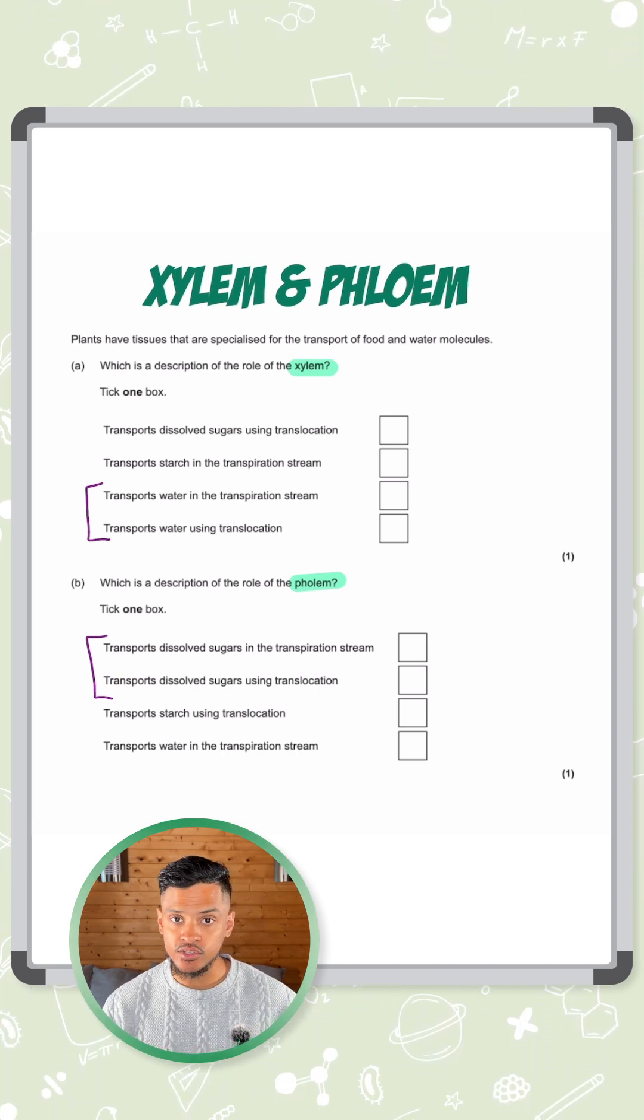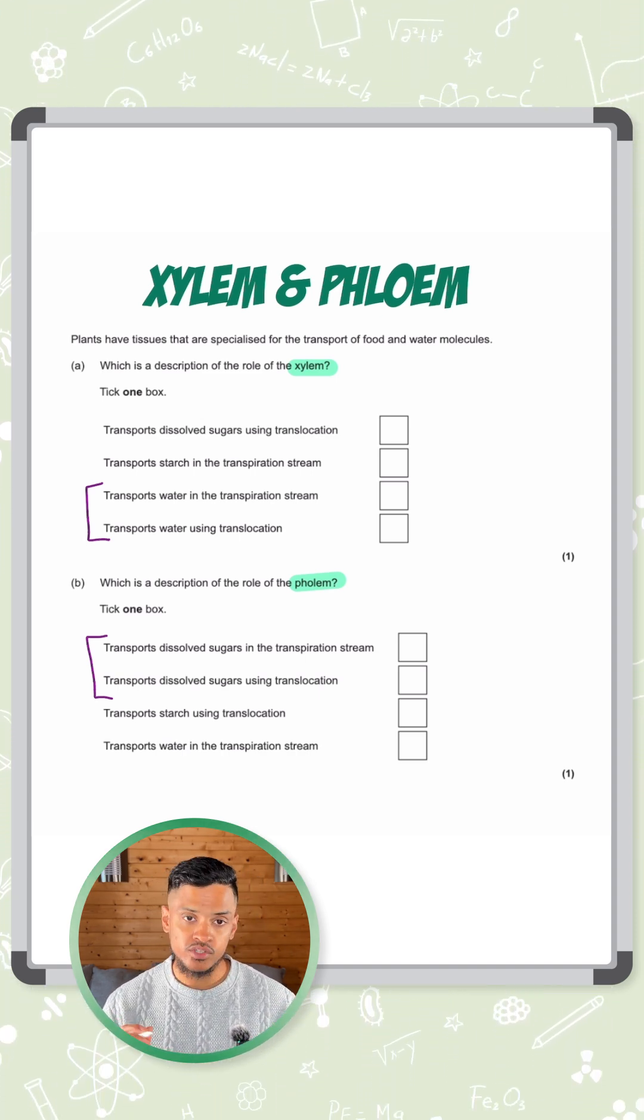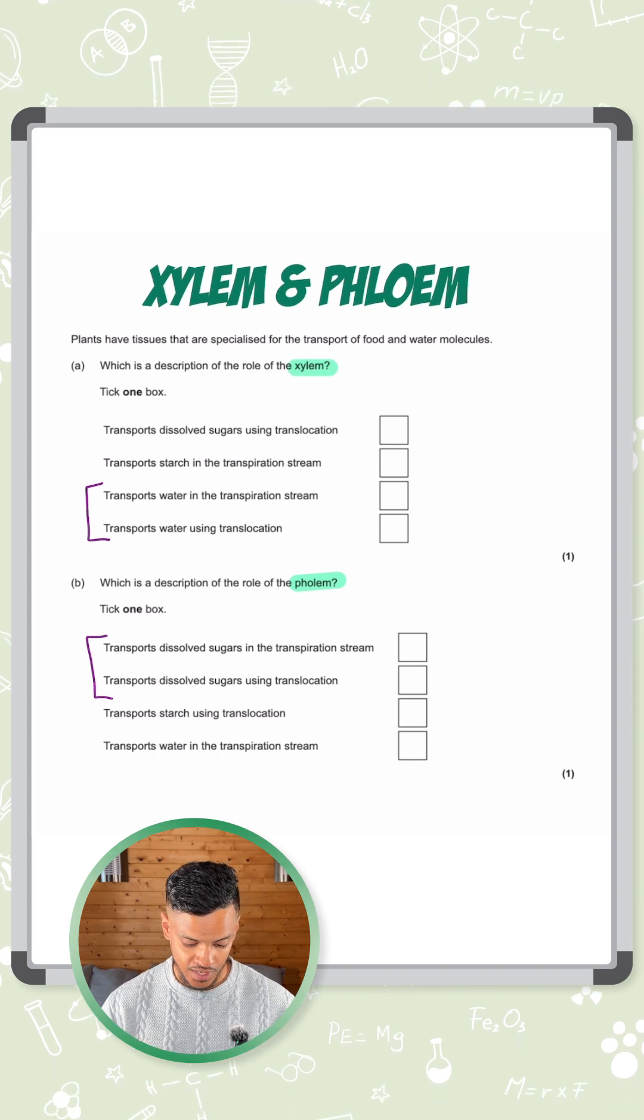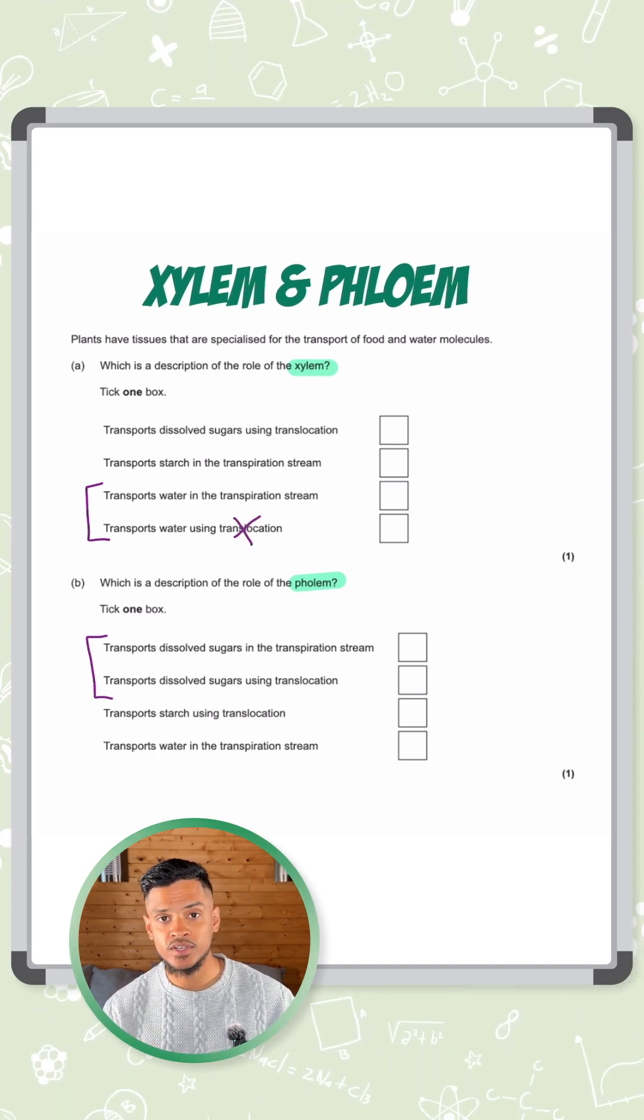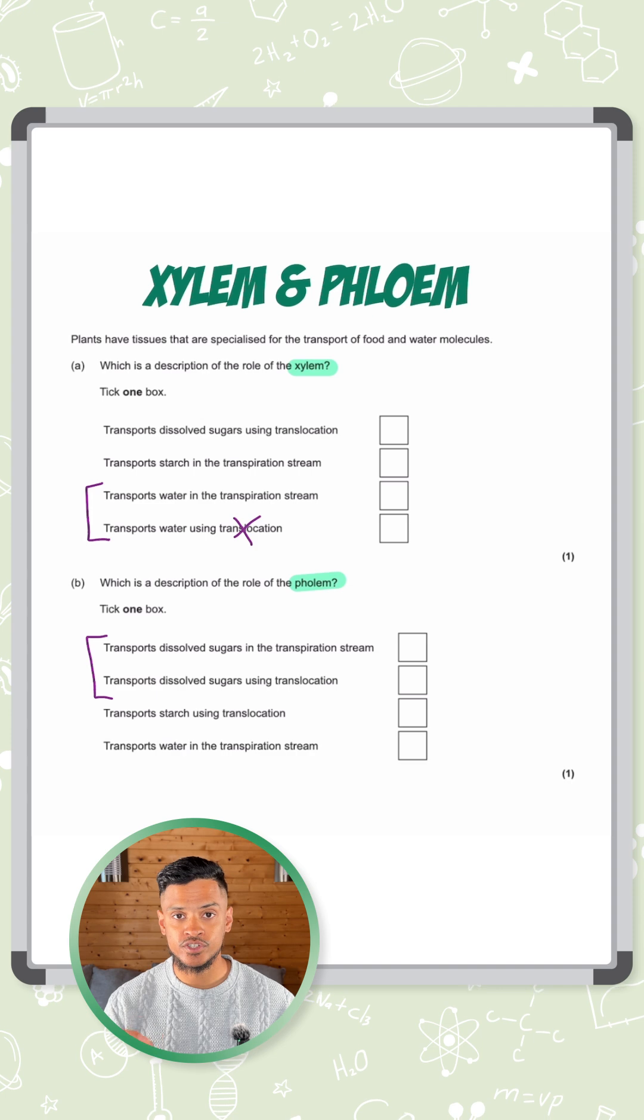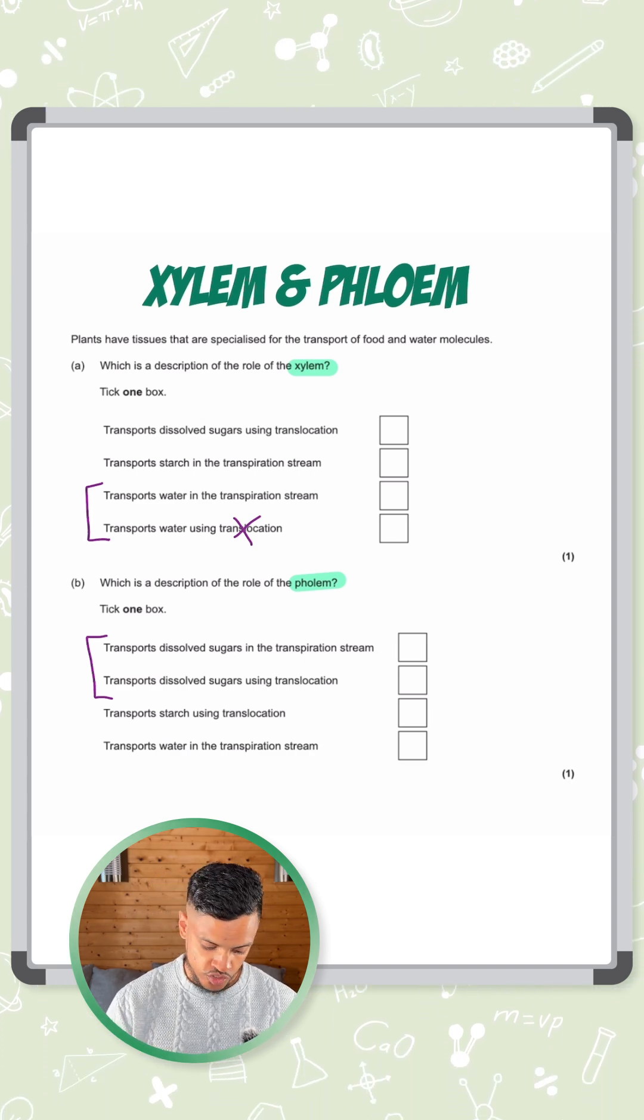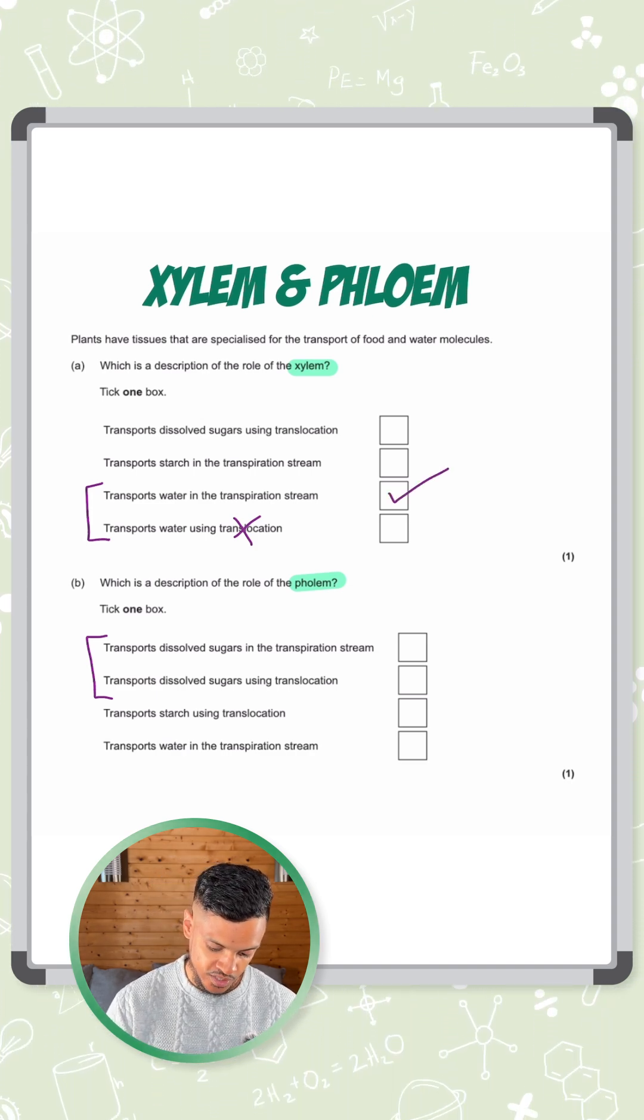It transports water in the transpiration stream or it transports water using translocation. Not translocation. Translocation is the movement of dissolved sugars around the plant. So it transports water in the transpiration stream.